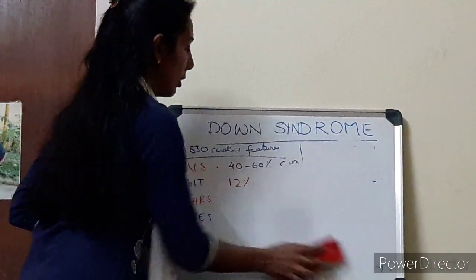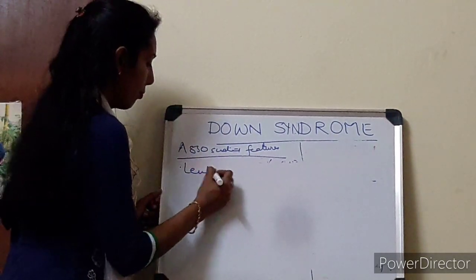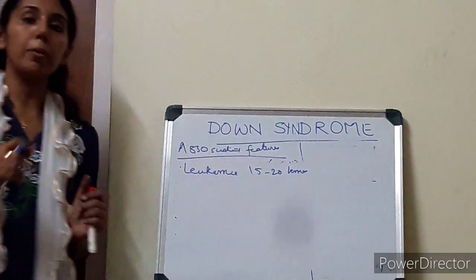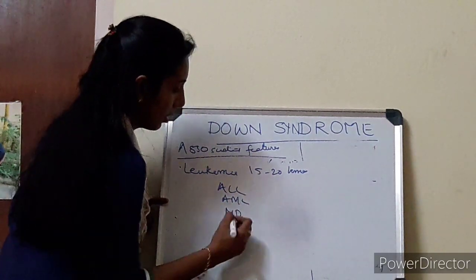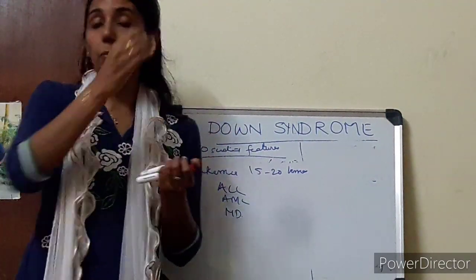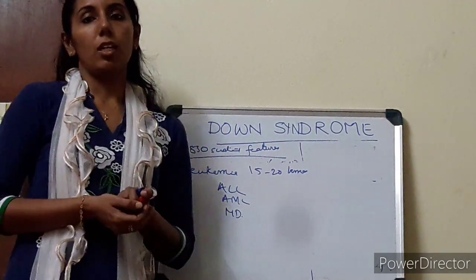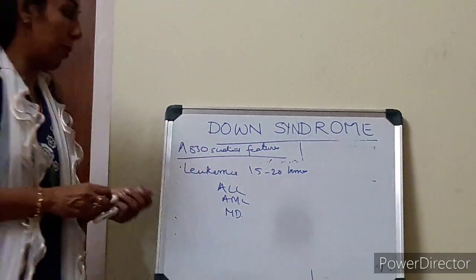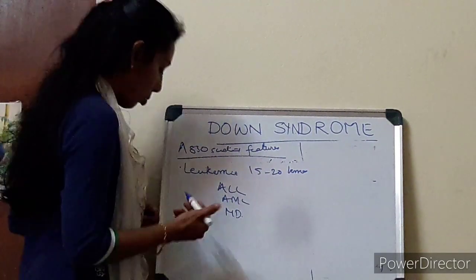Other associated findings: they have 15 to 20 times more risk of development of leukemia, especially ALL, AML, myelodysplasia, and transient myeloproliferative disorders. It is found that the children have a tendency to develop acute megakaryocytic leukemia, where GATA-1 mutations are seen. So they are more prone to develop leukemia — please screen them annually, and investigations should be done annually in the evaluation process of a Down syndrome child.